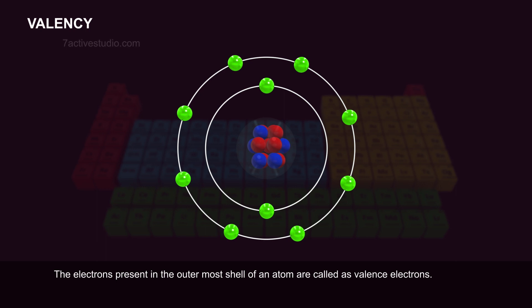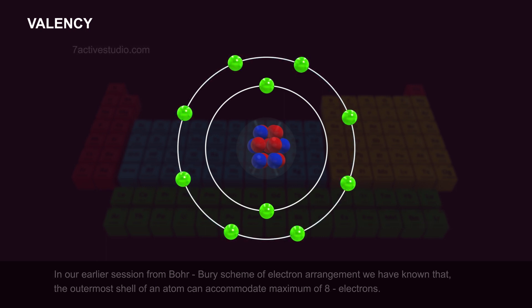The electrons present in the outermost shell of an atom are called valence electrons. In our earlier session on the Bohr-Bury scheme of electron arrangement, we have known that the outermost shell of an atom can accommodate a maximum of 8 electrons.